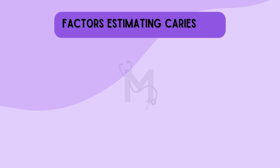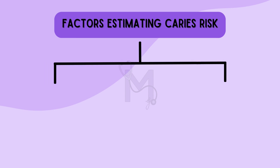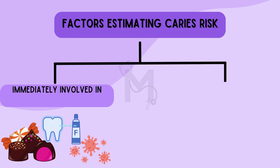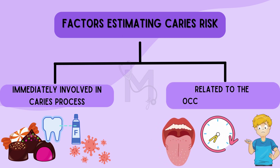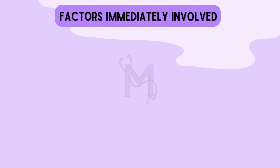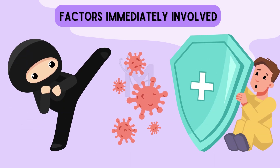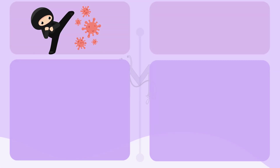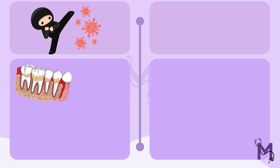Before we discuss the cariogram in detail, let's first understand the factors that are to be considered while estimating caries risk. These factors can be divided into two categories: factors which are immediately involved in the caries process, and factors related to the occurrence of caries without actually participating in the development of the lesion. On the attack side, factors could include dental plaque and the presence of specific microorganisms like Streptococcus mutans in the plaque and diet.